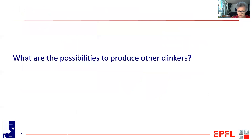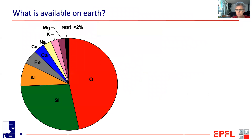Let's look at the possibilities to produce other clinkers. We are ultimately restricted by the materials we have on Earth. It's quite remarkable to realize that 98% of the Earth's crust is made up of just eight elements: oxygen, silicon, aluminium, iron, calcium, sodium, potassium, and magnesium. There's no point looking at the remaining 2% of elements because we simply don't have the amounts needed — it would be much too expensive.